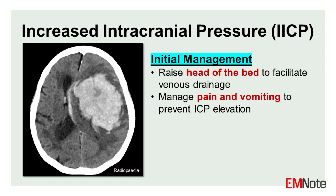Manage pain and vomiting. Pain and vomiting can exacerbate ICP by increasing intrathoracic pressure and decreasing venous return from the brain. Adequate analgesia and anti-emetic medications should be administered to alleviate these symptoms and prevent further ICP elevation.